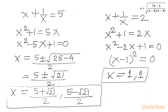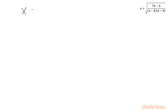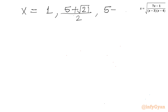So our candidate solutions are x equals 1 (with multiplicity 2), x equals (5 plus root 21) over 2, and x equals (5 minus root 21) over 2. We now have to cross-examine which values we accept and which are extraneous solutions.